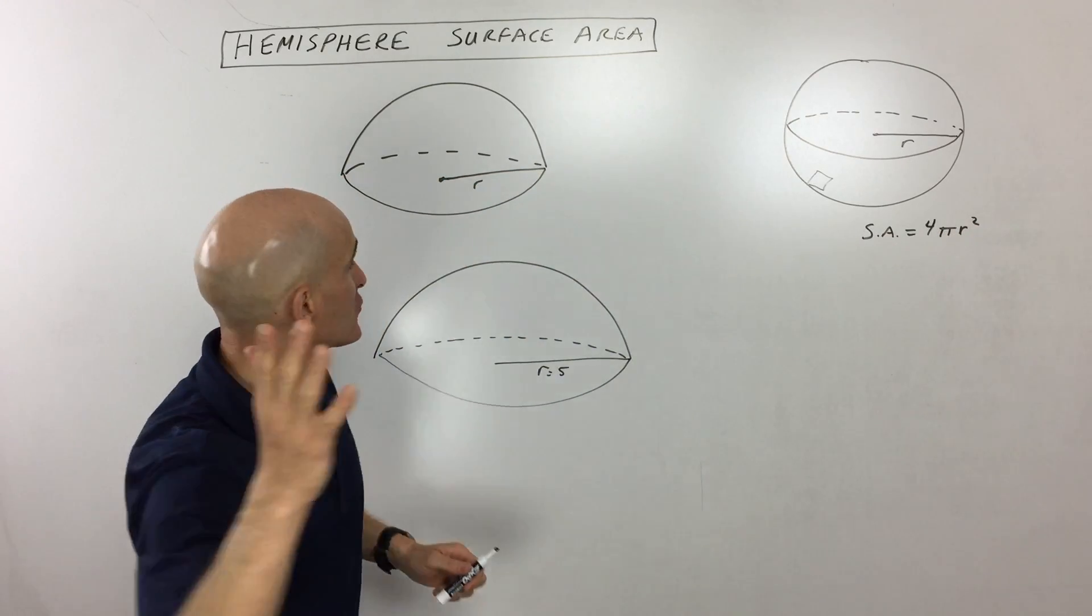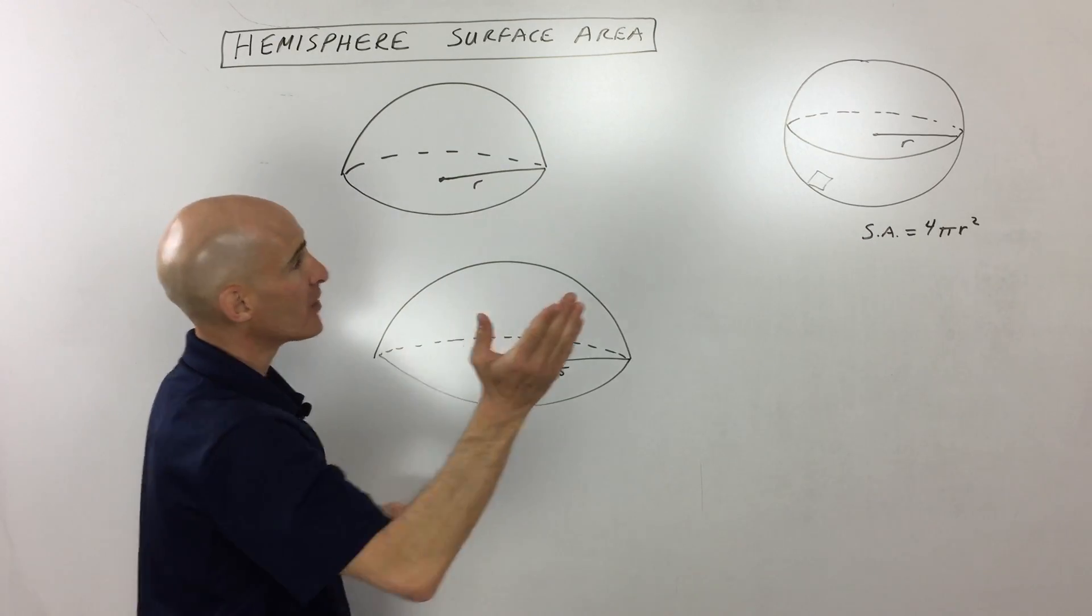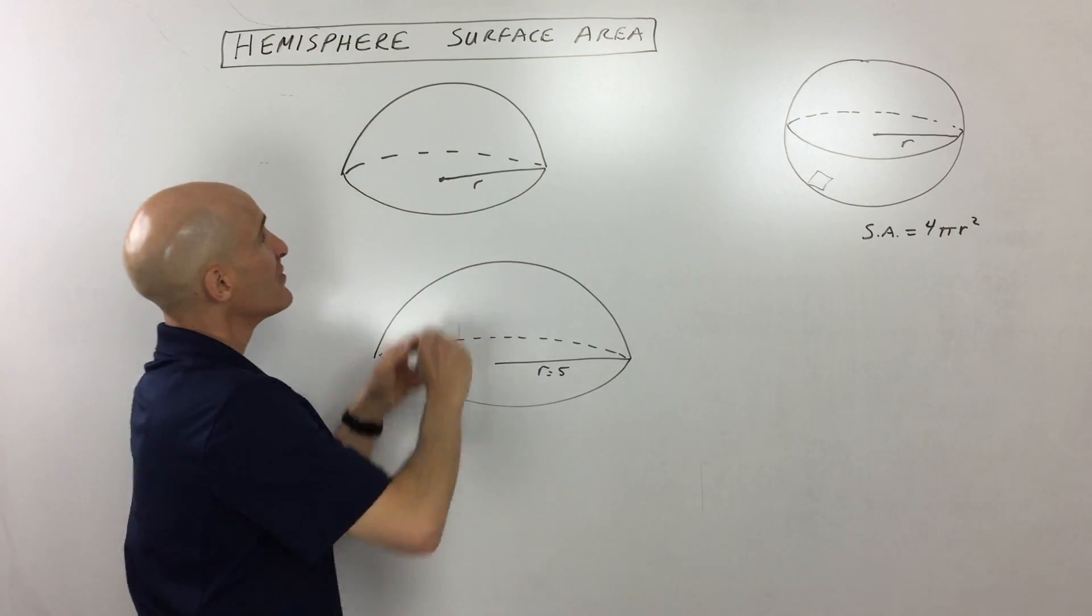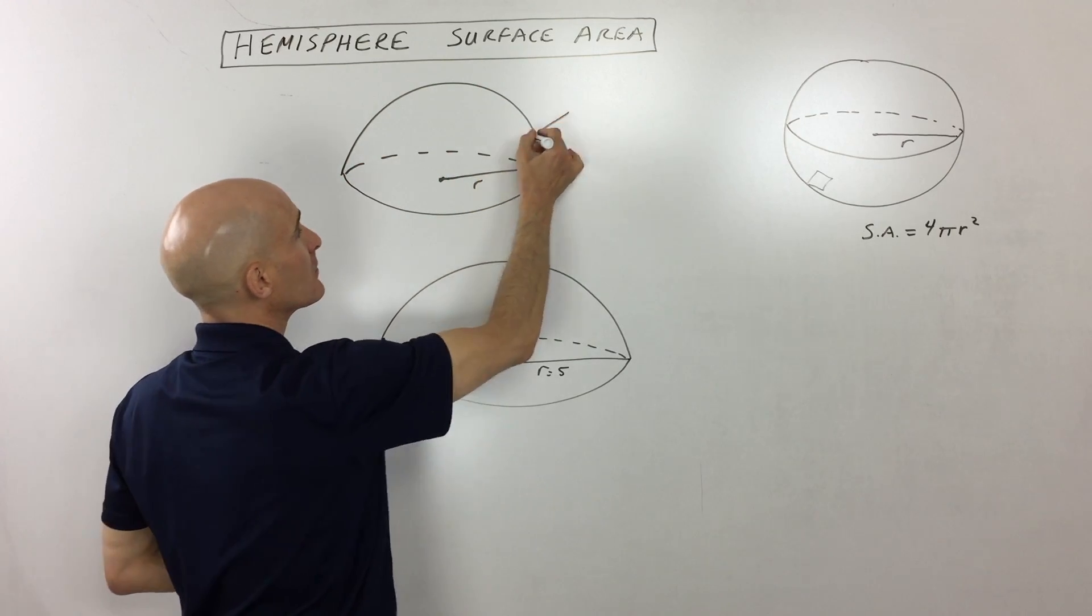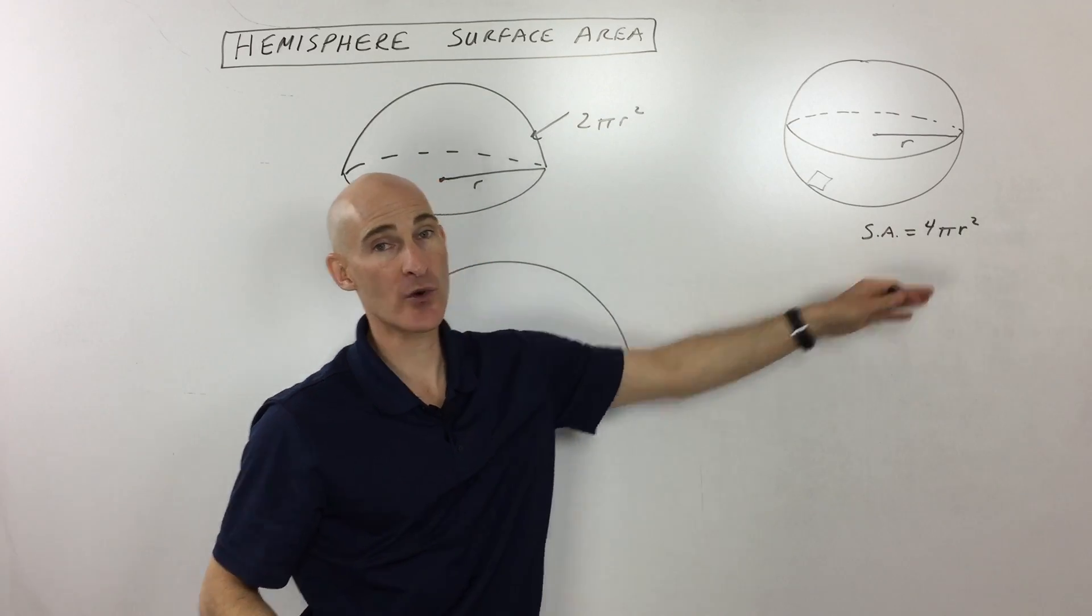But then what we do with a hemisphere is we go ahead and cut it in half. So now what happens when you cut this in half is this surface right here is going to be 2πr² because it's half of 4πr². But in the process of cutting it in half,